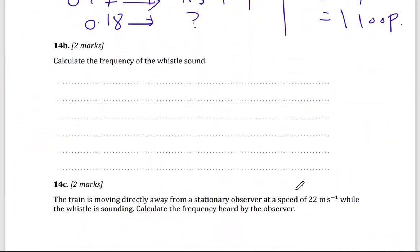Now, we calculate the frequency of the whistle sound. Now, general formula, if I have a standing wave, the one end is closed and the other end is opened, it will be N, V, divided by 4 times L.